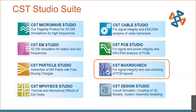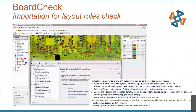CST Board Check is built into PCB Studio and allows imported boards to be evaluated against industry-standard netlist routing rules. It can tell you if traces are going over a via pad or too close to the edge of a ground plane, checking the whole board automatically. This was originally developed by IBM.